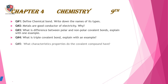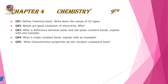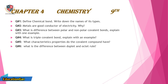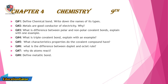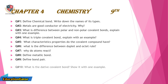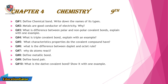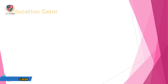Chapter 4, Chemistry 9th. Question 1: Define chemical bond and write down the names of its types. Question 2: Metals are good conductors of electricity — why? Question 3: What is a triple covalent bond? Explain with an example. Question 4: What is the difference between polar and nonpolar covalent bonds? Explain with one example. Question 5: What characteristic properties do covalent compounds have?